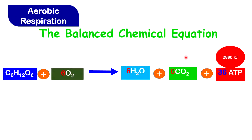The balanced chemical equation for aerobic respiration is: glucose reacts with oxygen to produce water, carbon dioxide, and energy. Glucose is C6H12O6, oxygen is O2 with a 6 in front, water is H2O with a 6 in front, and carbon dioxide is CO2 with a 6 in front. So once you get this equation correct, you put a 6 in front of everything except the glucose.